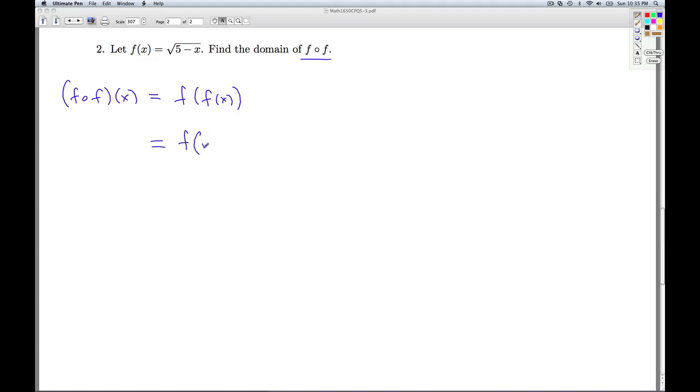f(x) is the square root of 5 minus x. So I take this and everywhere I see x, I substitute it in. So this is the square root of 5 minus the square root of 5 minus x.